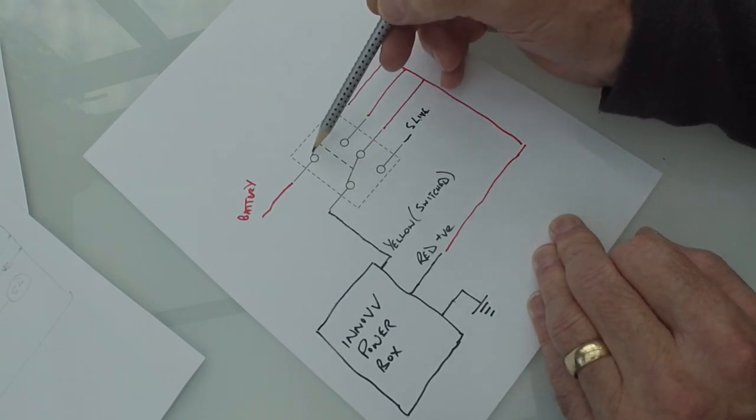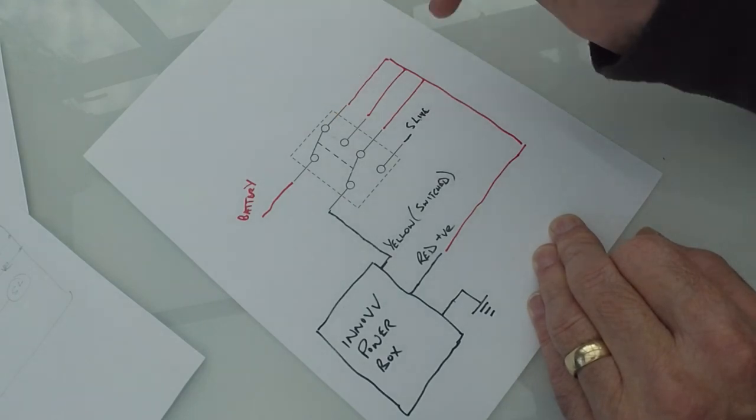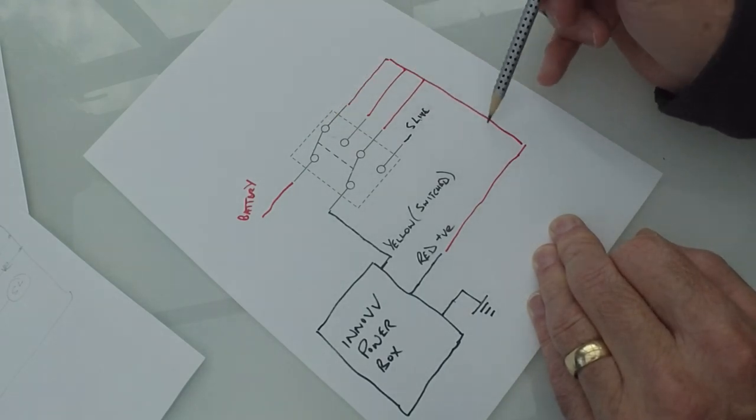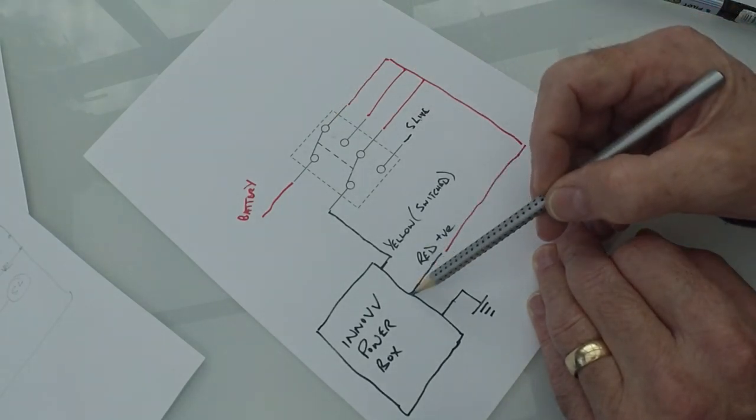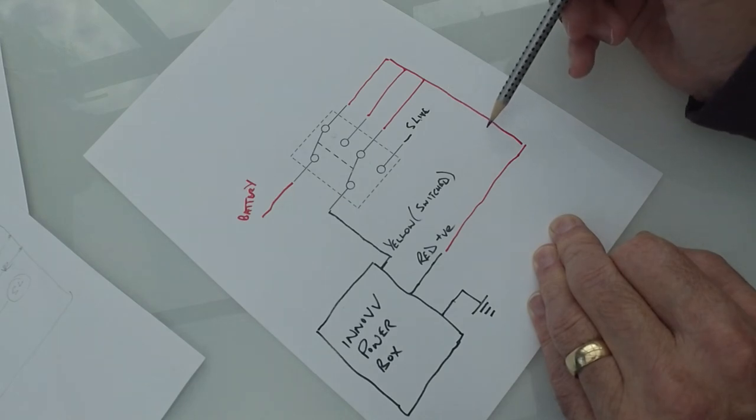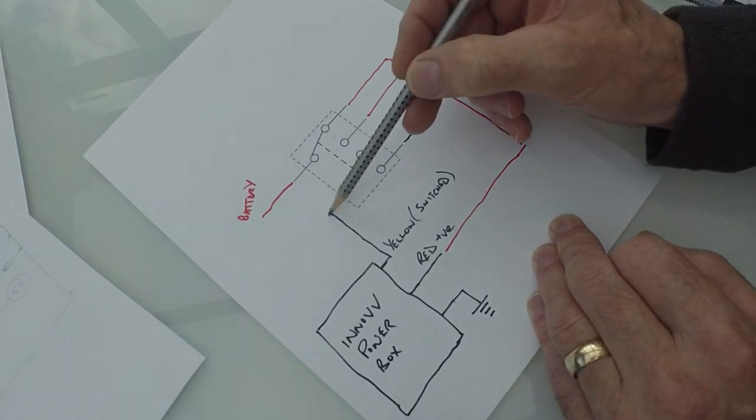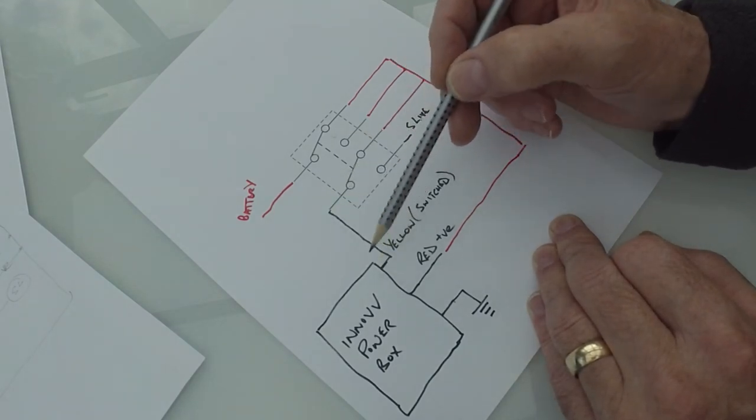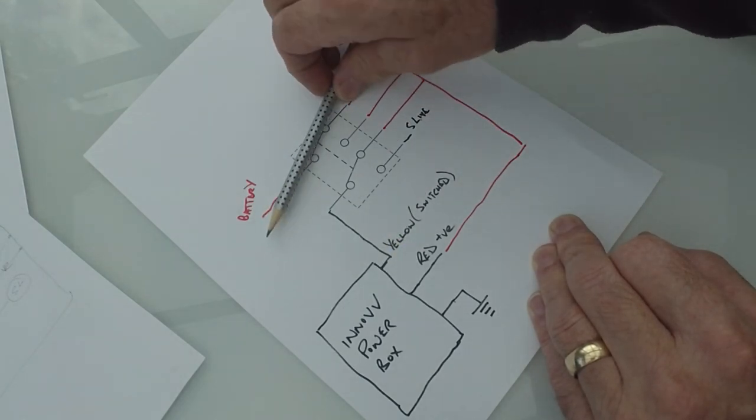But if you're in the position that this shows now, you've got power onto the power line of the power box, and you've got also power onto the switched live of the power box. So that is permanently on. In this position, the camera is permanently on.